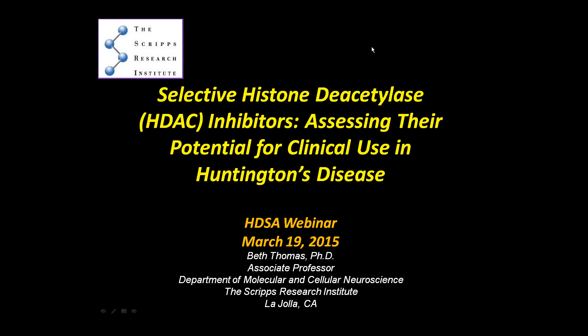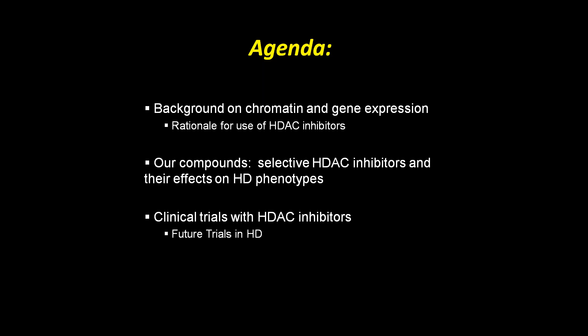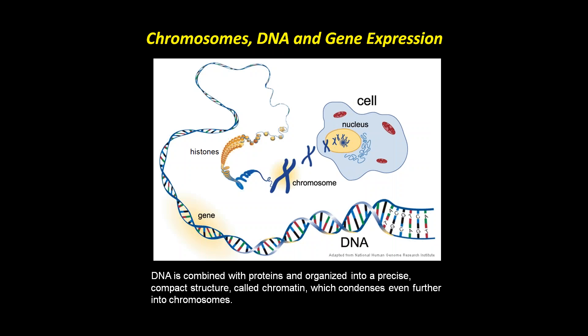Today I'll first provide some background on chromatin and gene expression so you can understand how these compounds work and the rationale for their use in Huntington's disease. Then we'll discuss our selective inhibitor compounds and their effects on different HD phenotypes — mostly in mouse models. Finally, I'll cover clinical trials with broadly acting HDAC inhibitors and potential future trials for Huntington's disease.